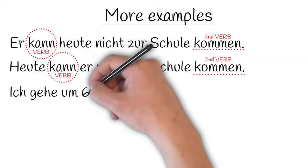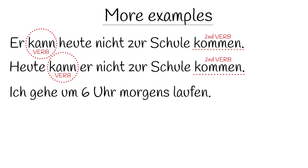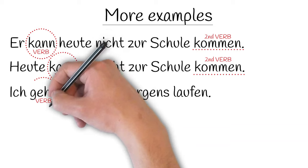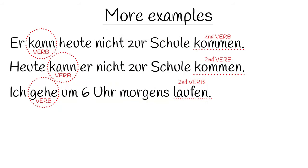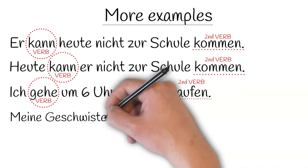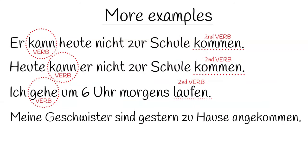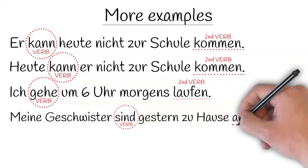Let's look at our third example: 'Ich gehe um sechs Uhr morgens laufen' — I go running at six o'clock in the morning. Once again, the first verb is in second position after 'ich,' the subject, and the second verb comes right at the end. Our fourth example: 'Meine Geschwister sind gestern zu Hause angekommen' — my siblings arrived at home yesterday. Notice that 'sind' is actually the third word in the sentence, but because 'meine Geschwister' is one concept — my siblings — 'sind' is still in the second position. In this case, it's a past tense verb, and 'angekommen' (arrived) goes right at the end of the sentence.